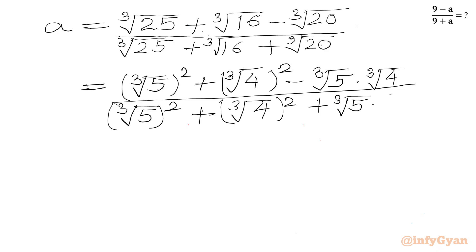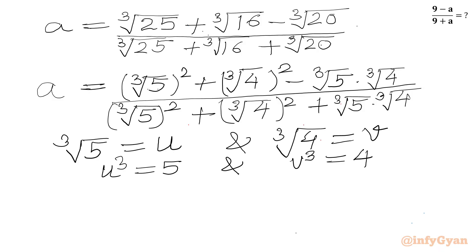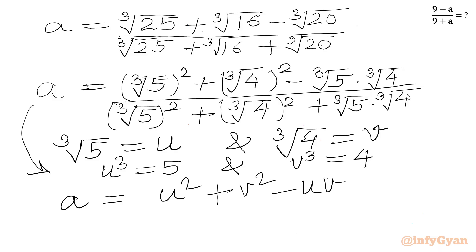We can write cube root of 5 times cube root of 4. Now we can easily consider cube root of 5 — let's say this is u — and cube root of 4 — let's say this is v. So I can write u cubed will be equal to 5 and v cubed will be 4. So I can write our A expression: A will be equal to u squared plus v squared minus uv over u squared plus v squared plus uv.